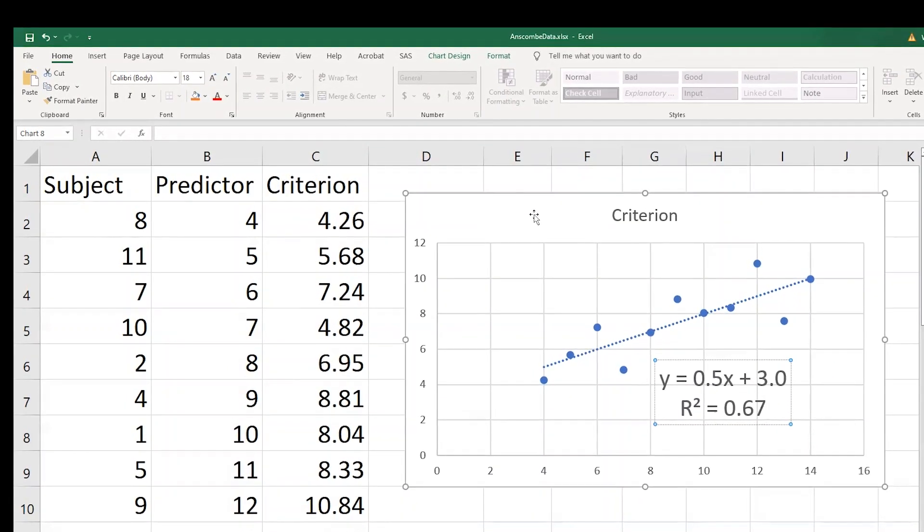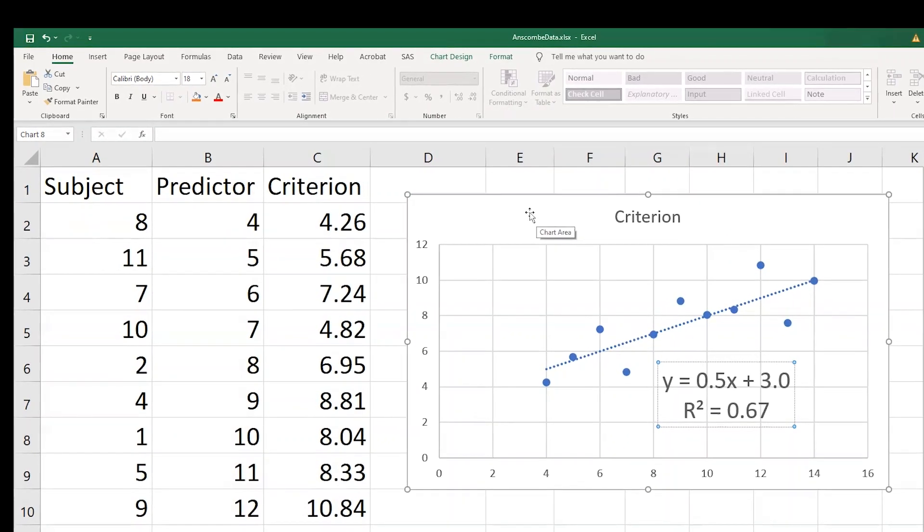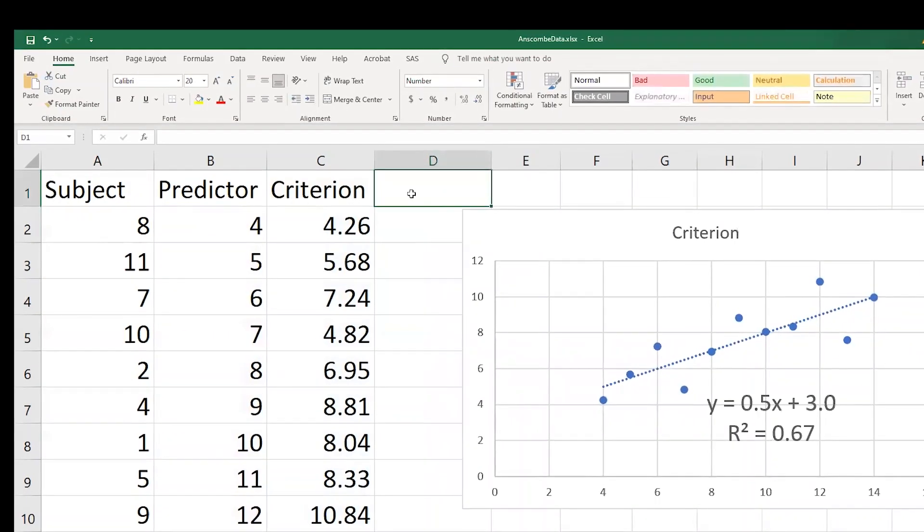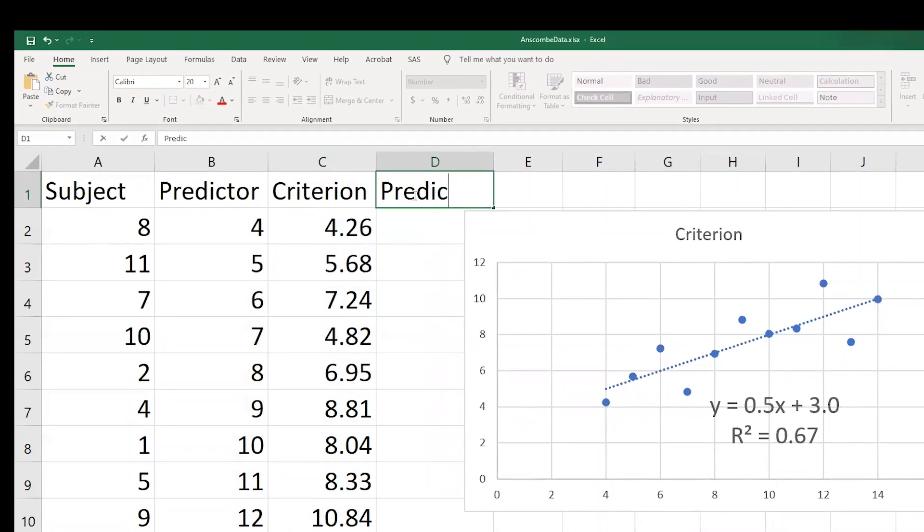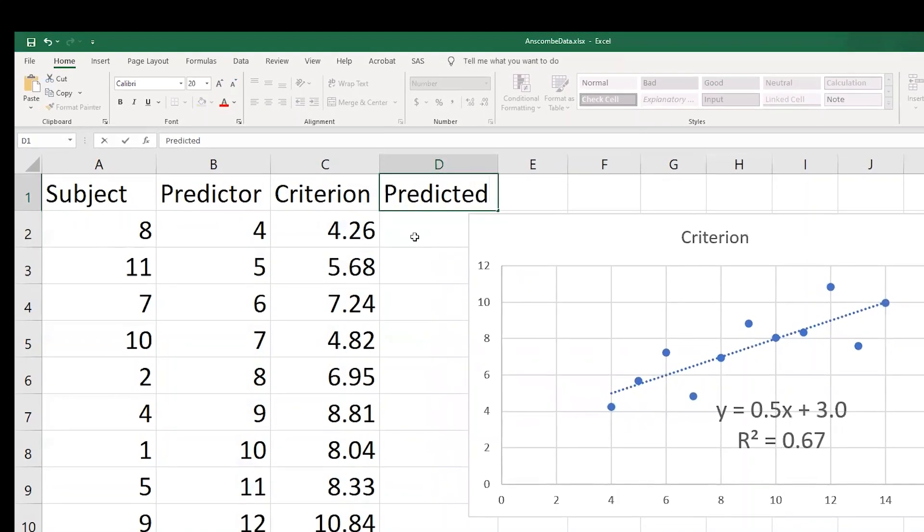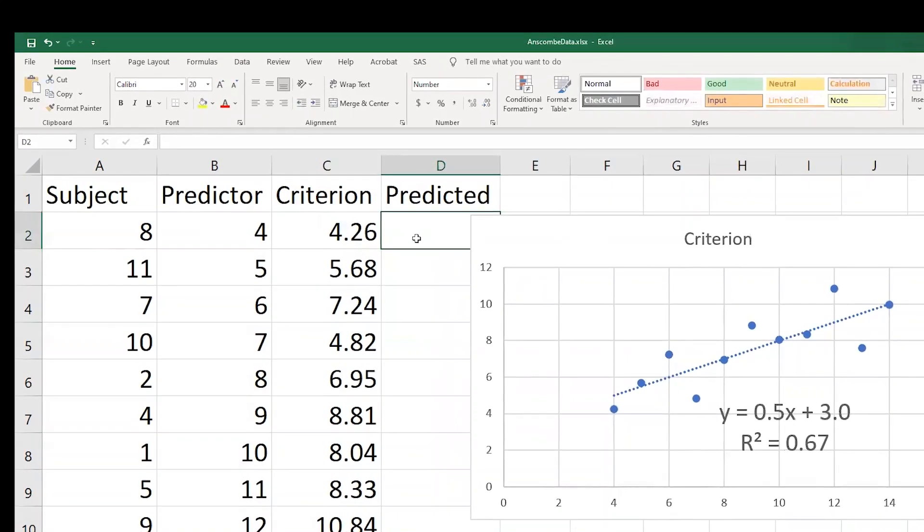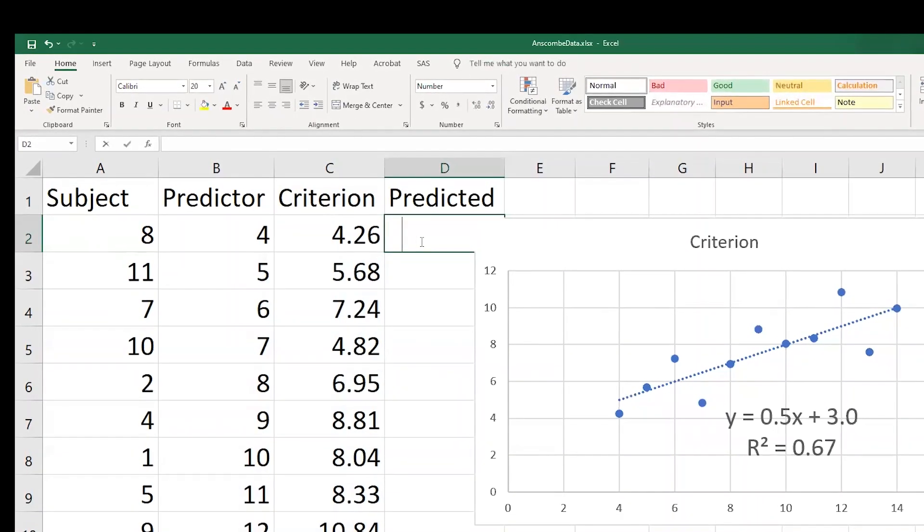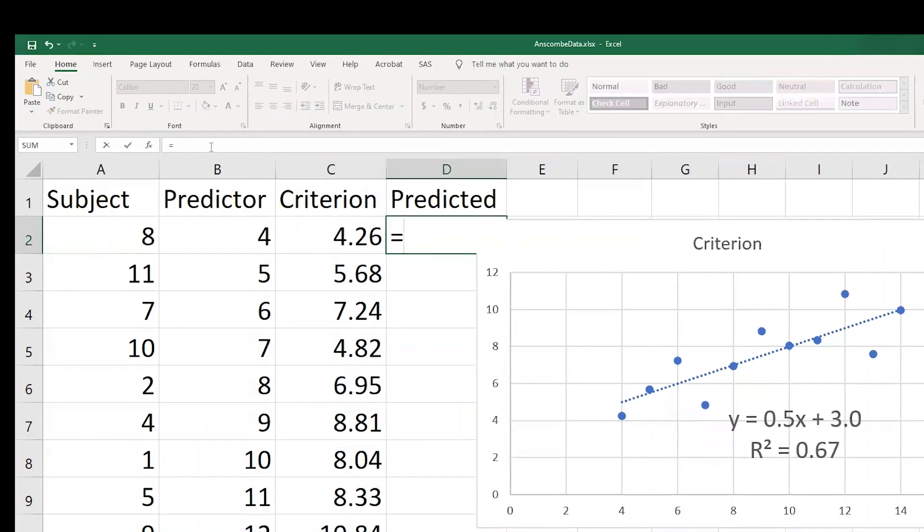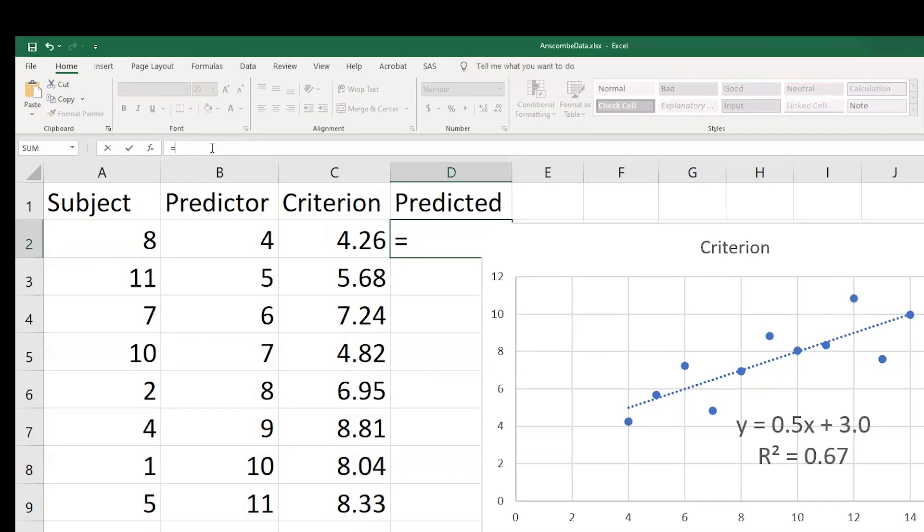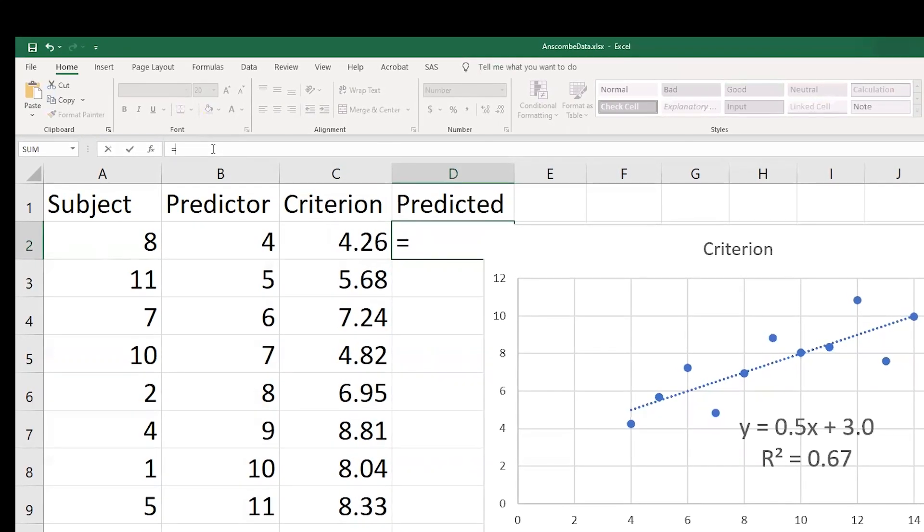Maybe we want to take a look at what the predicted scores are for these people. Well, to do that, we'll make a new column and we'll say predicted scores. And in order to calculate the predicted score for the first person, I'm going to hit an equal sign, and that's going to make the little equation part light up. Putting an equal sign in Excel says, hey, I want to enter an equation.